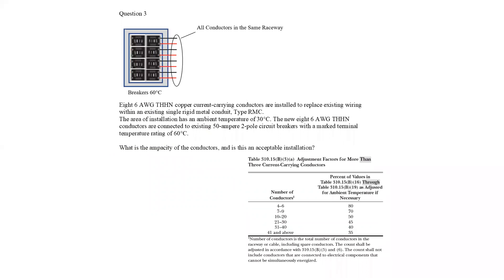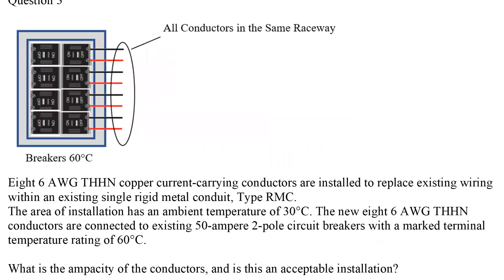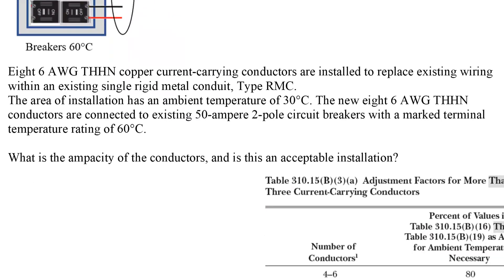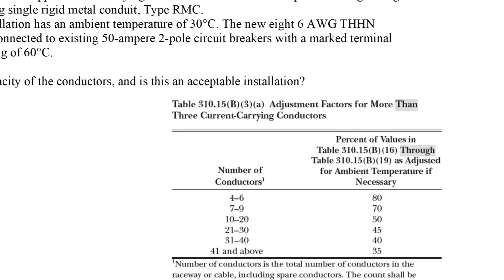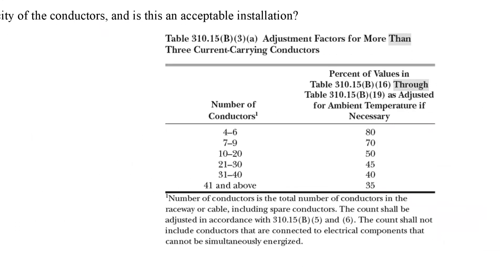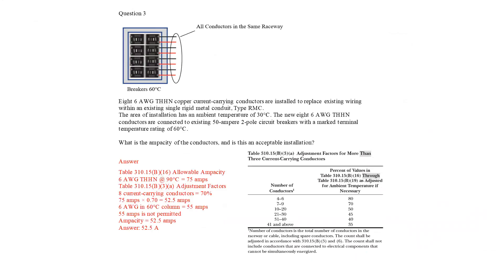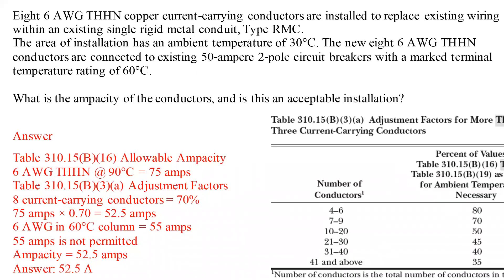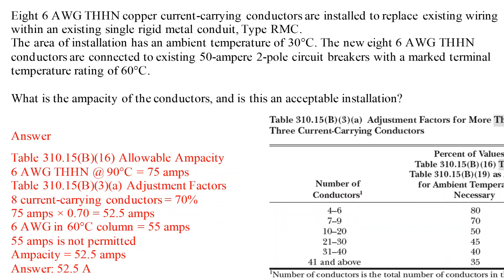Question three covers conductors all in the same raceway: determining the derating percentage for more than three current-carrying conductors in a conduit. The question is presented on one slide, the relevant code section on the next, and then the answer with the calculation method on the following slide — consistent with the format used throughout.